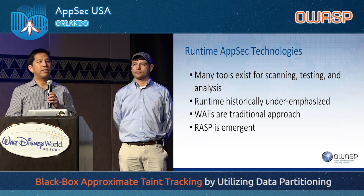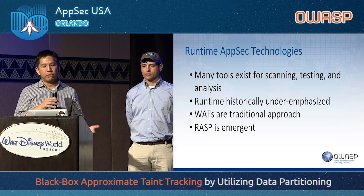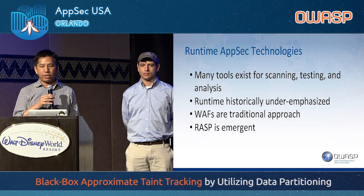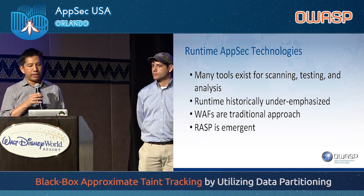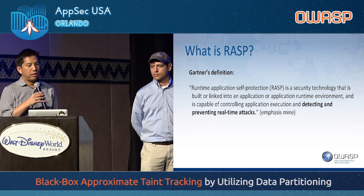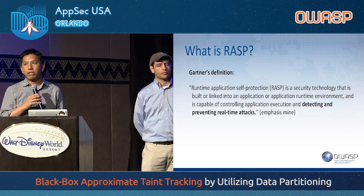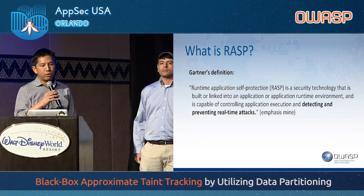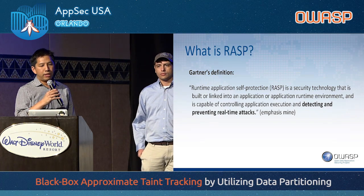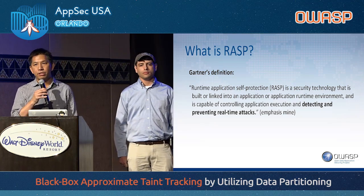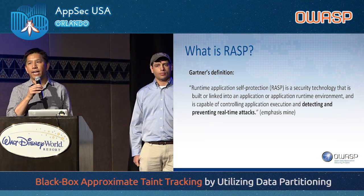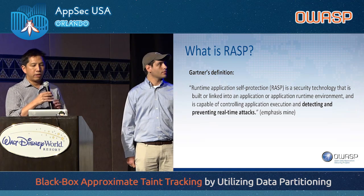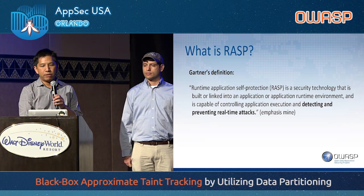You can see the difference is that WAFs are what's well-known, what the industry has been reliant upon for runtime security. But RASP is emergent. RASP is coined by Gartner - it stands for Runtime Application Self-Protection. It's a security technology that is built or linked into an application or application runtime environment, and it's capable of controlling application execution and detecting and preventing real-time attacks. That's been the focus of RASP and there's been a lot of interest in it.